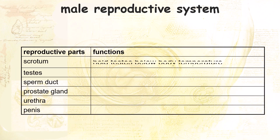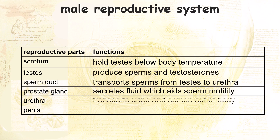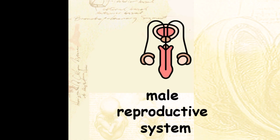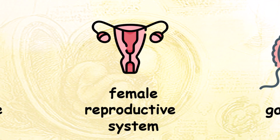Here is the summary of the parts of the male reproductive system and their respective functions. Besides the male reproductive system, we also have the female reproductive system.